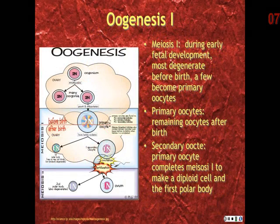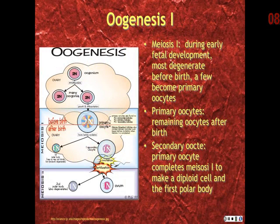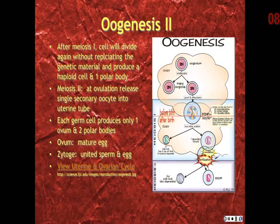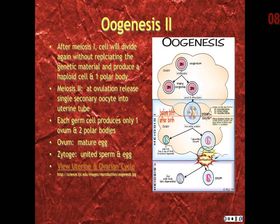Regarding the formation of oocytes, or oogenesis: meiosis one occurs during early fetal development. Most of these cells will degenerate before birth, but a few survive and become primary oocytes, remaining in this state until puberty. The secondary oocyte completes meiosis one to make a diploid cell and the first polar body. After meiosis one, the cell divides again without replicating the genetic information, producing a haploid cell and another polar body in meiosis two. At ovulation, a single secondary oocyte is released; each germ cell produces only one ovum and two polar bodies. The ovum is the mature egg, and the zygote is the united sperm and egg.